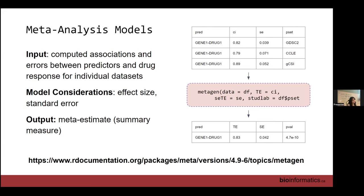When we were doing the analysis with two variables — gene expression and drug response data from different cell lines — we calculated concordance index or correlation, and the model gives us the standard error. That's exactly where it comes from. We did it one by one on different P-sets, and now we are trying to use all the P-sets together to prove our point.